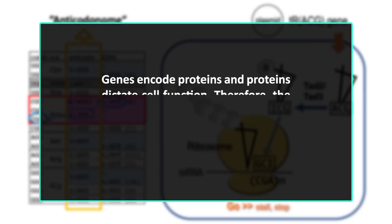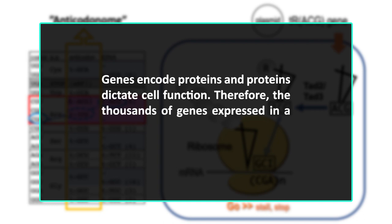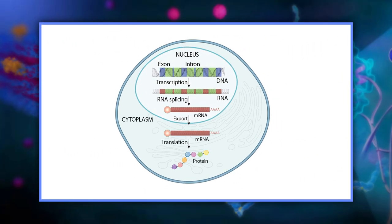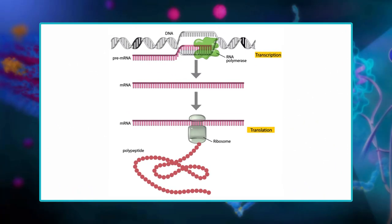First, we need to understand what it means when we say that a gene is expressed. If the gene encodes a protein, expression of a gene means how much functional protein is made. Genes encode proteins, and proteins dictate cell function. Therefore, thousands of genes expressed in a particular cell determine what that cell can do. Gene expression is the process by which information from a gene is used in the synthesis of a functional gene product that enables it to produce end products — protein or non-coding RNA — and ultimately affect a phenotype.